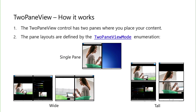The two-pane view control has two panes where you place your content. It adjusts the size and arrangement of the panes depending on the space available to the window. The pane layouts are defined by the two-pane view mode enumeration: single pane, where only one pane's content is shown as specified by the pane priority property; wide mode, where two panes are shown left and right, or a single pane's content spans left and right as specified by the wide mode configuration property; and tall mode, where two panes are shown top and bottom, or a single pane's content spans top and bottom as specified by the tall mode configuration.